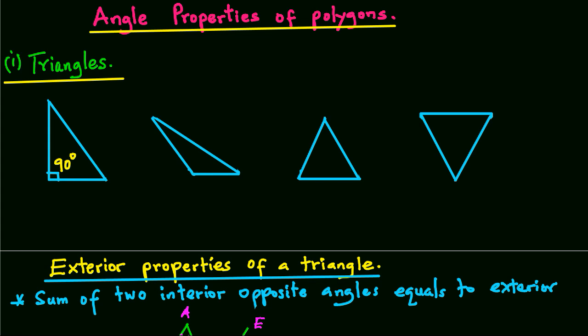A triangle in which all the sides and angles are not equal is called a scalene triangle.